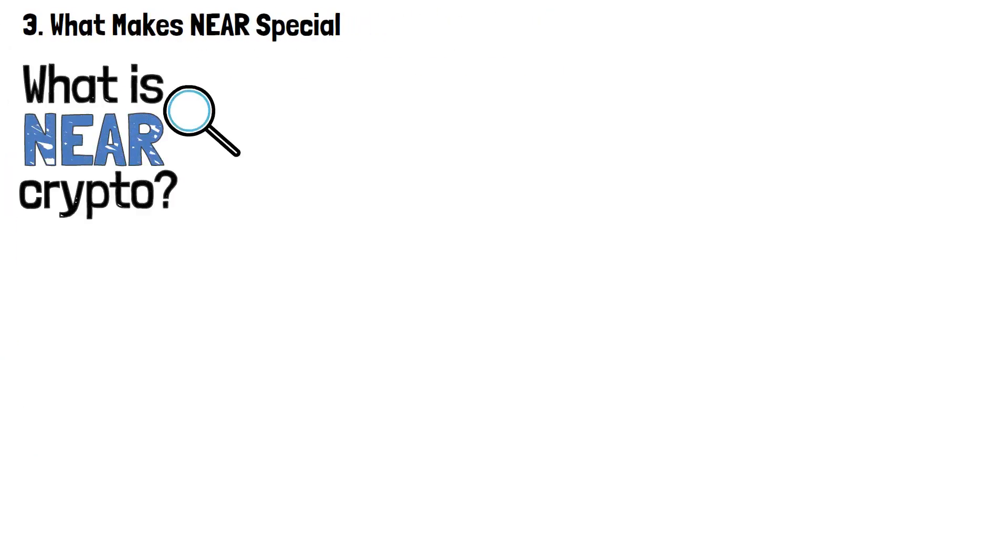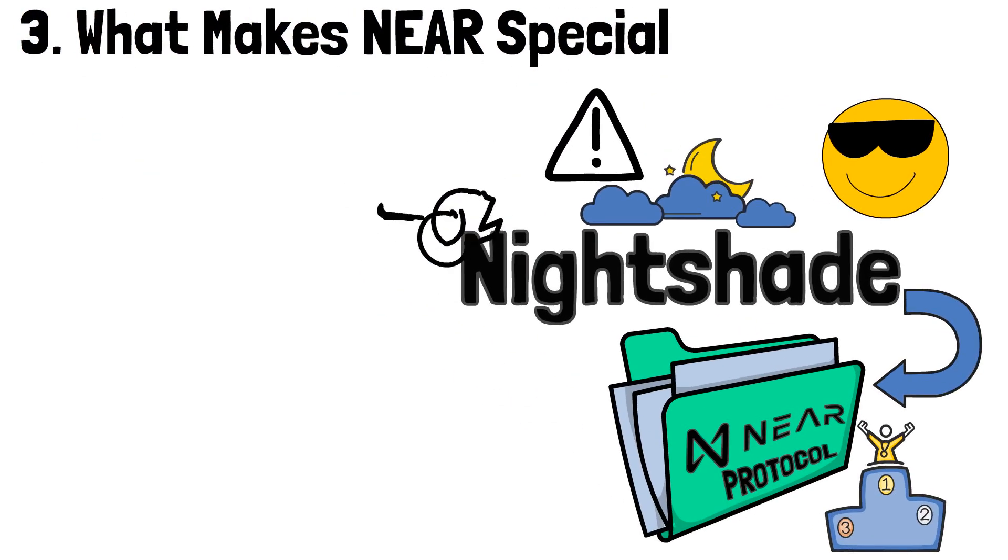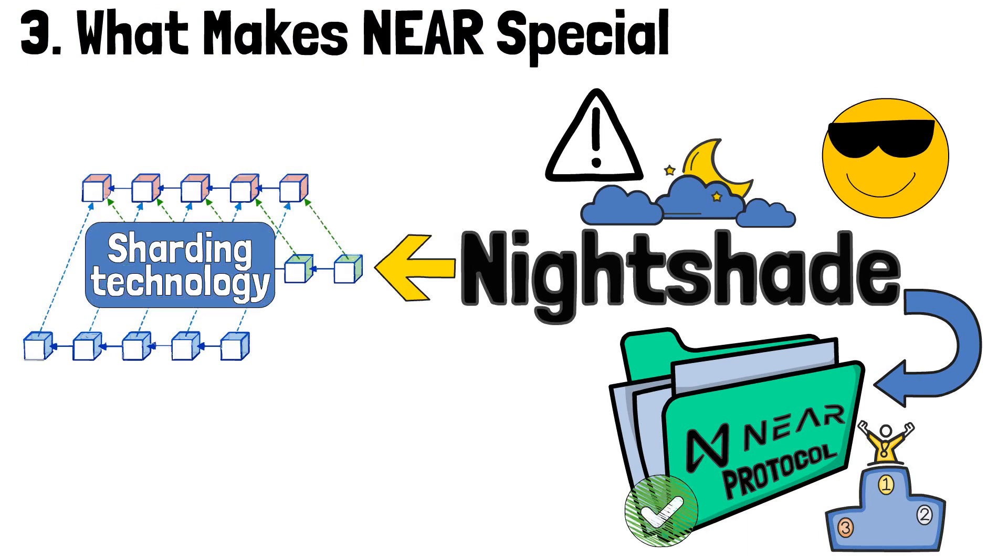To answer what is NEAR in crypto, we must take a look at something that's called Nightshade. This badass-sounding technology lies at the NEAR protocol's core, and is among the most important features that make the project stand out from the crowd. This Nightshade is actually a sharding technology, NEAR's answer to enhancing data processing efficiency.